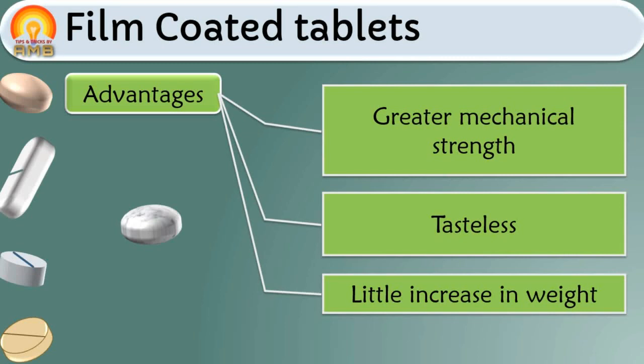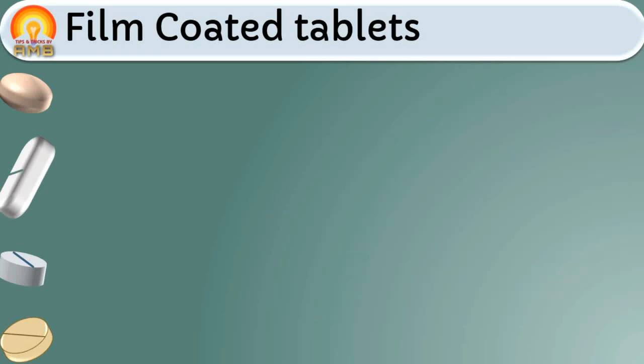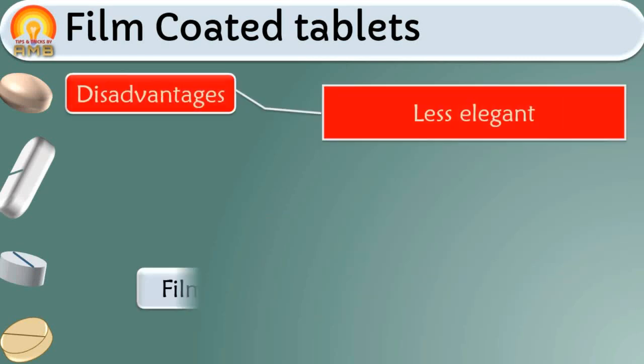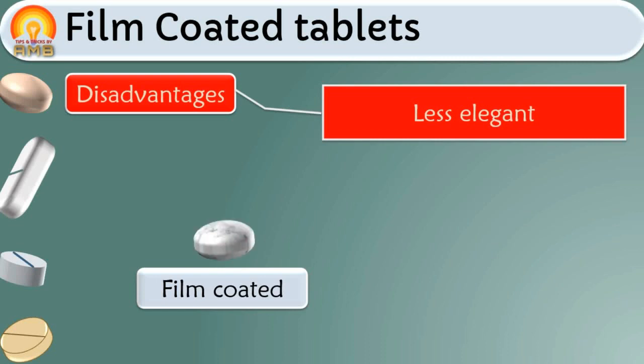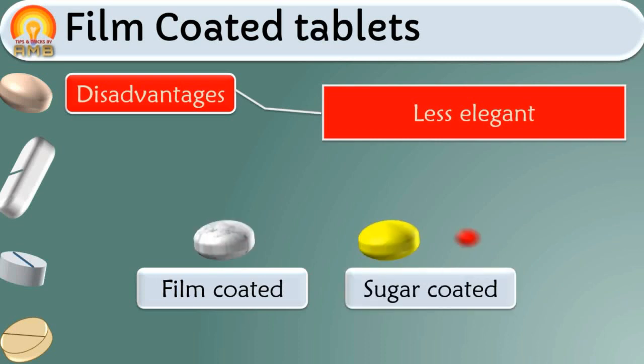In sugar coating the weight of the tablet is tremendously increased, but in film coating the increase in weight is very negligible, which is an advantage. However, film coating makes the tablet less elegant compared to sugar coated tablets. Sugar coated tablets are very attractive and colorful, but film coated tablets are not as attractive — that is the disadvantage of film coated tablets.